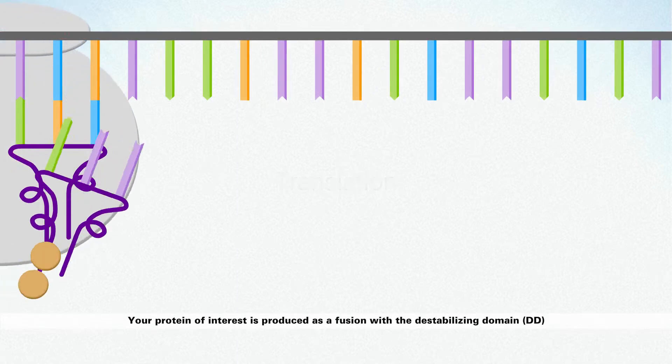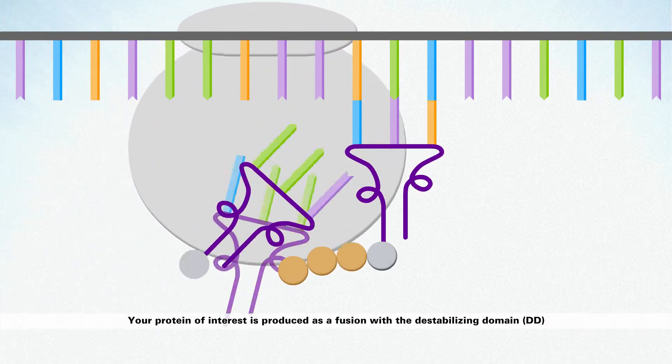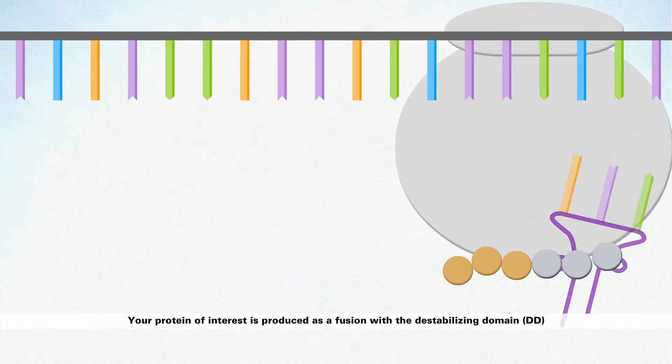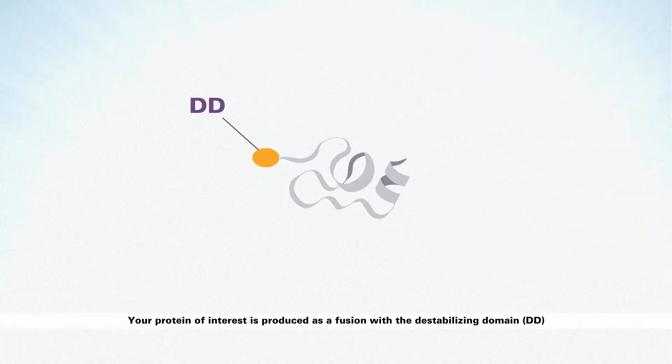Your gene of interest should be cloned into the provided vector, which encodes the destabilizing domain, or DD. Your protein of interest will be translated as a fusion with the DD.